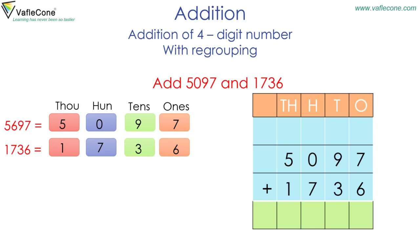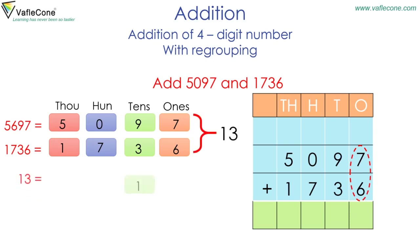Add 5097 and 1736. Arranging addends as per place value and start adding from the ones place. Seven plus six is equal to thirteen. And thirteen is one ten and three ones.